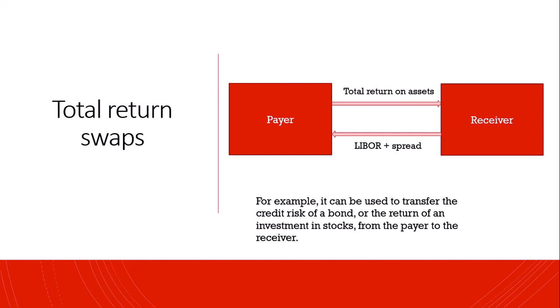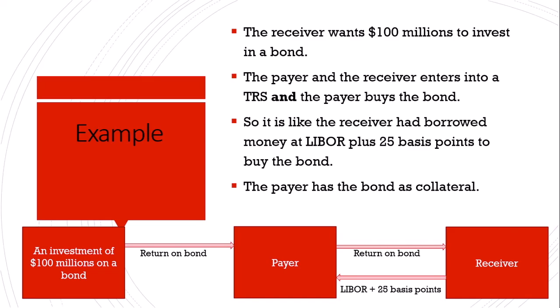Another instrument is a total return swap, in which there are two parties — a payer and a receiver. The payer pays the total return on an asset, which can be bonds or stocks, while the receiver pays LIBOR plus a spread. For example, the receiver wants $100 million to invest in a bond, so the payer and receiver enter into a total return swap and the payer buys the bond — effectively, the receiver has borrowed money at LIBOR plus 25 basis points to buy the bond. If the receiver defaults on that payment, the payer holds the bond as collateral.